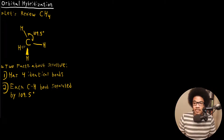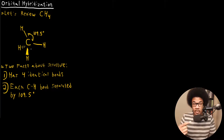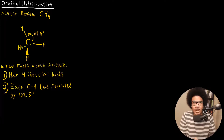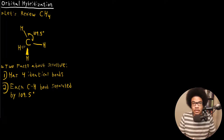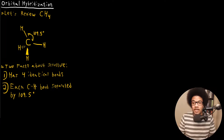There are two facts I want to point out about this structure before we discuss orbitals in detail. First, it has four identical bonds — all of these C-H bonds have the exact same energy, the same bond length, and the same 109.5-degree separation between adjacent C-H bonds. They're identical in every way. There's no difference between any of these C-H bonds; they're all the same.